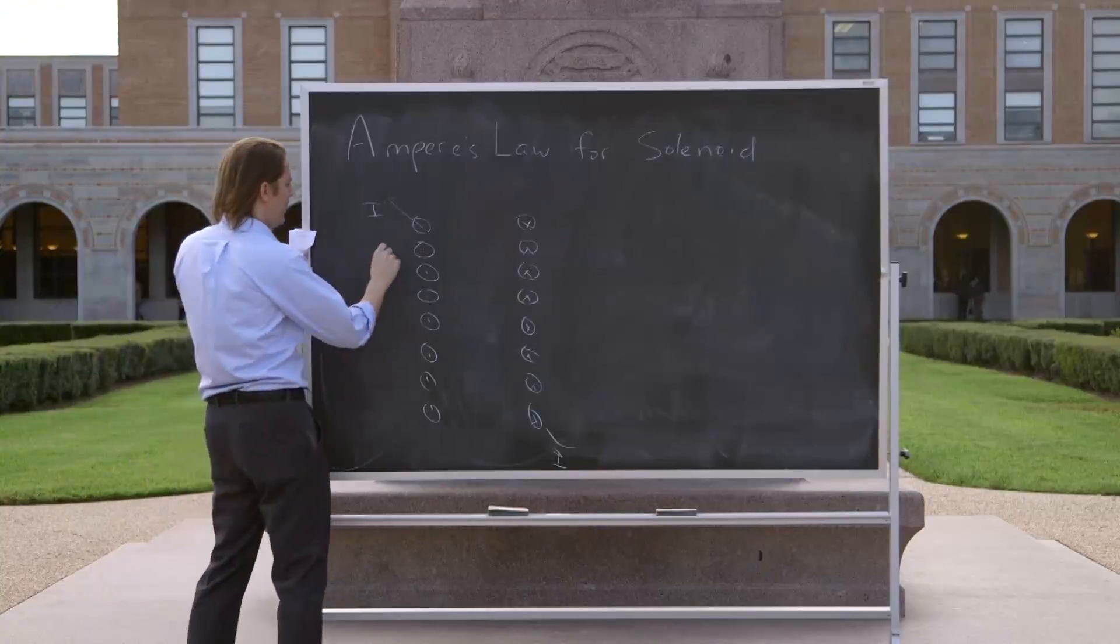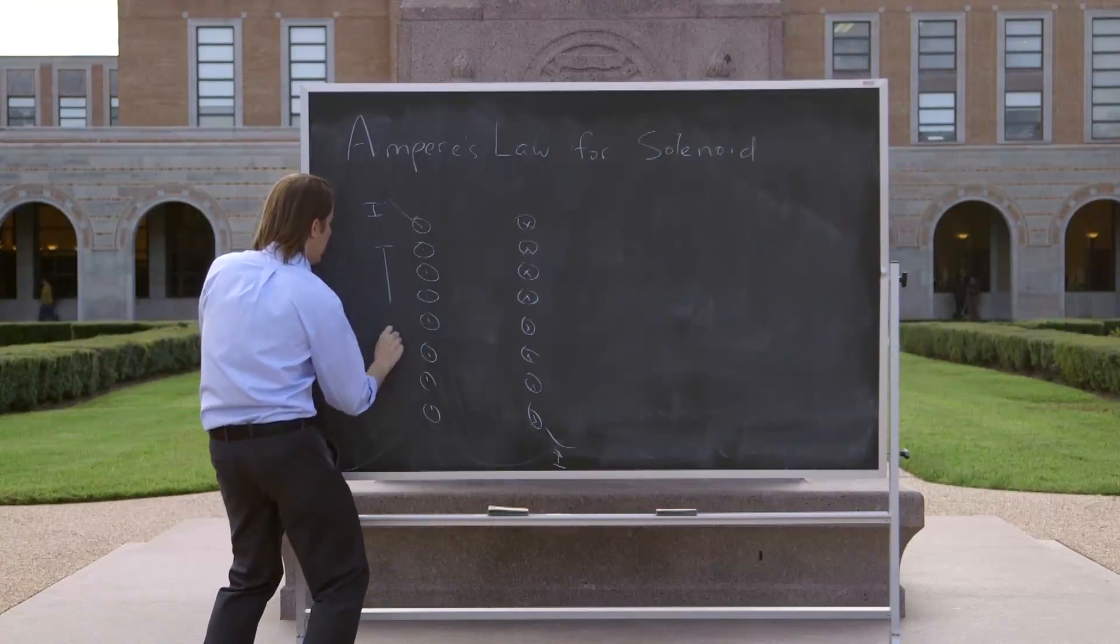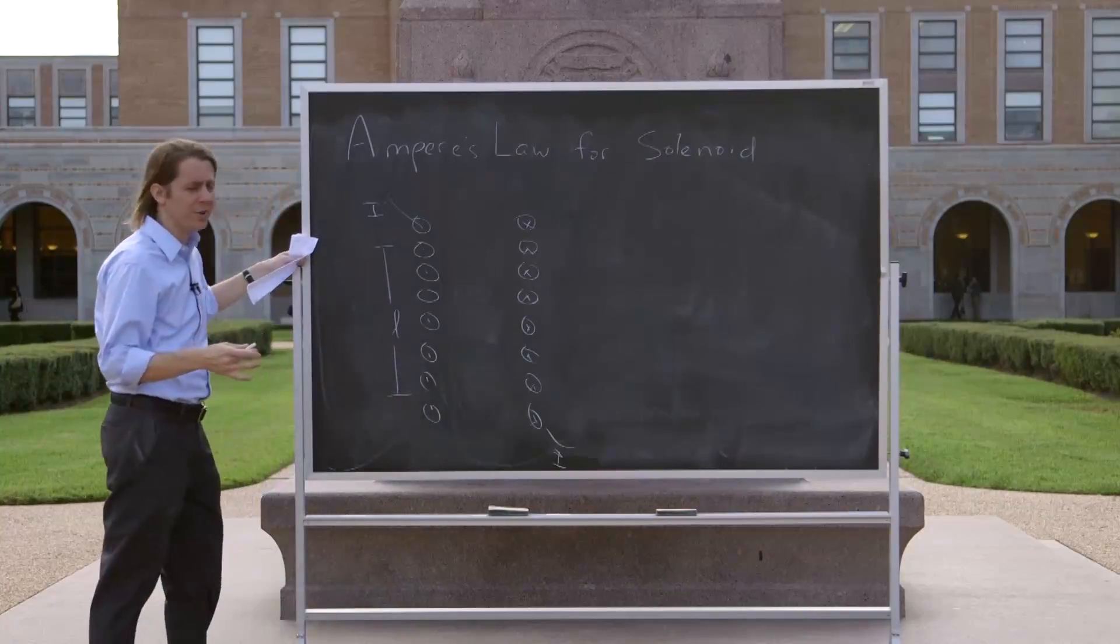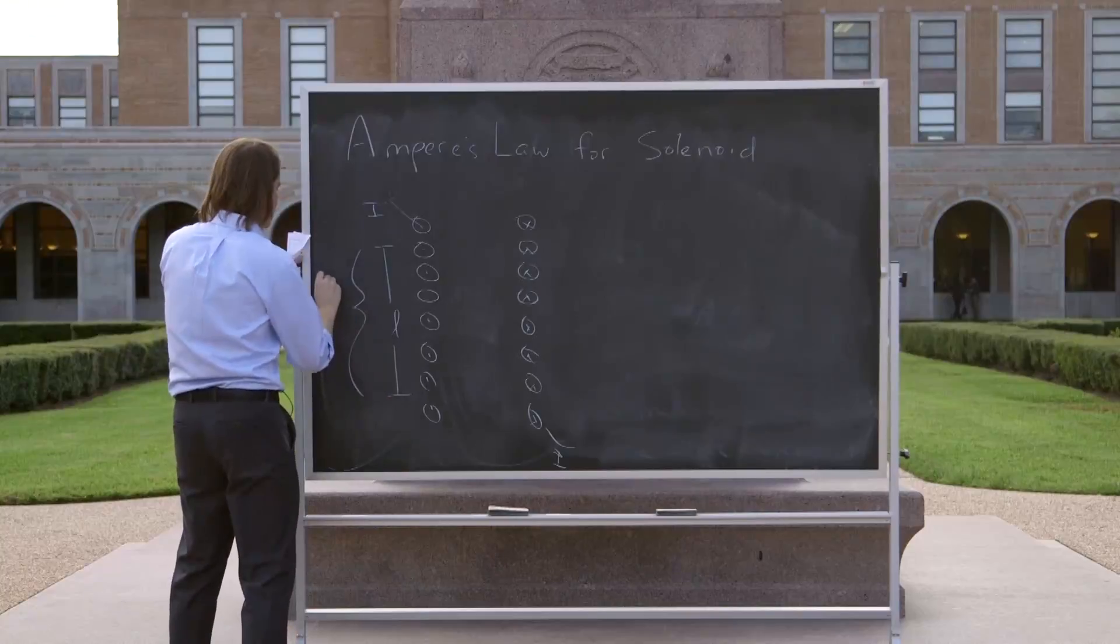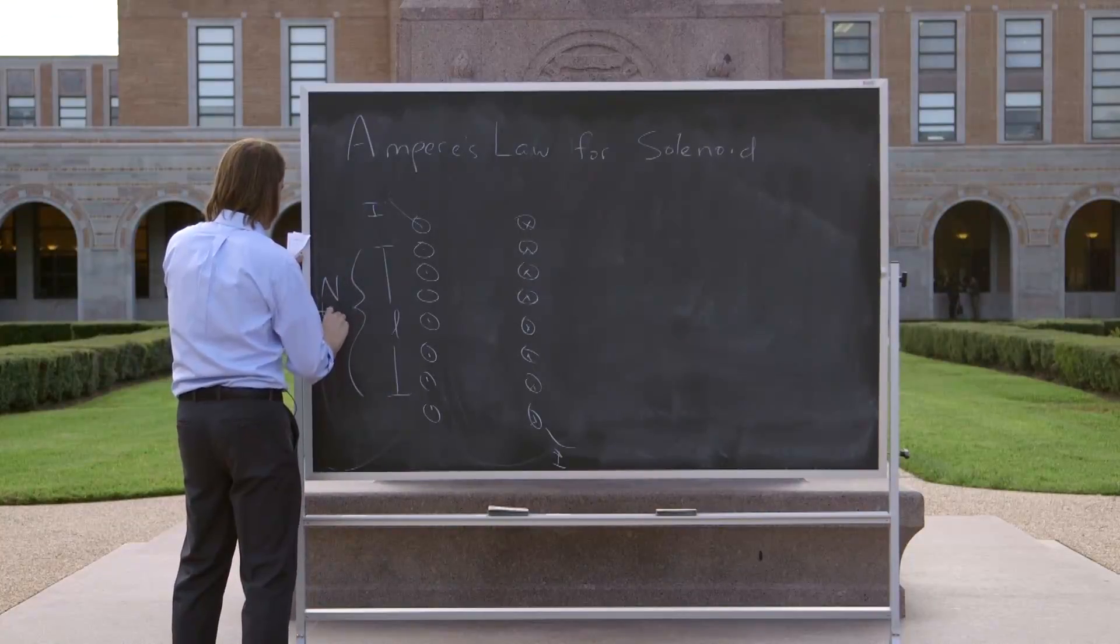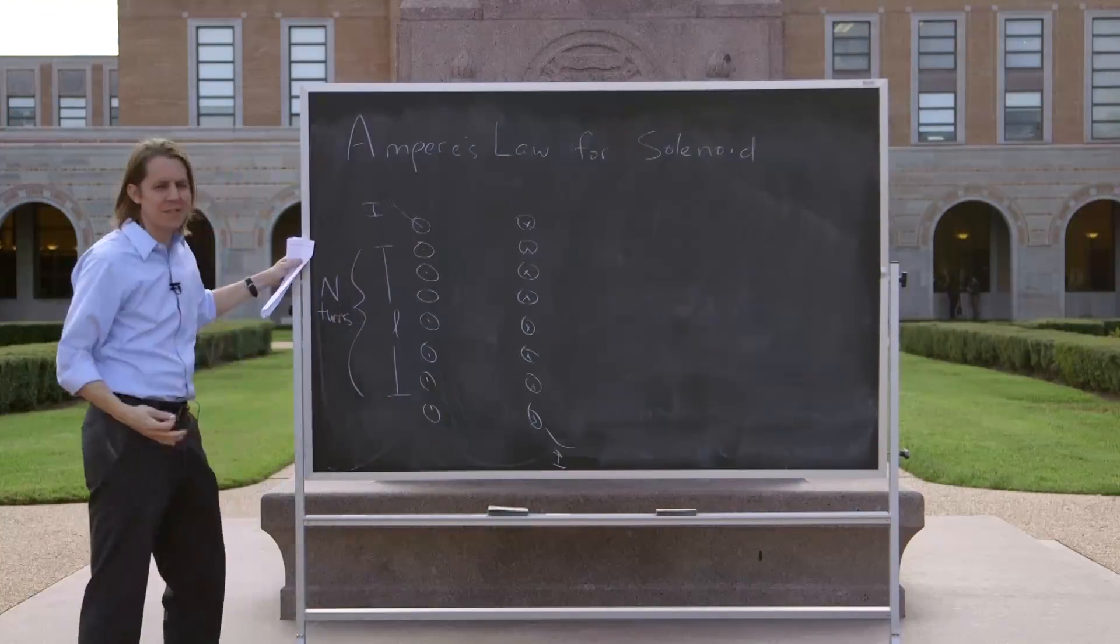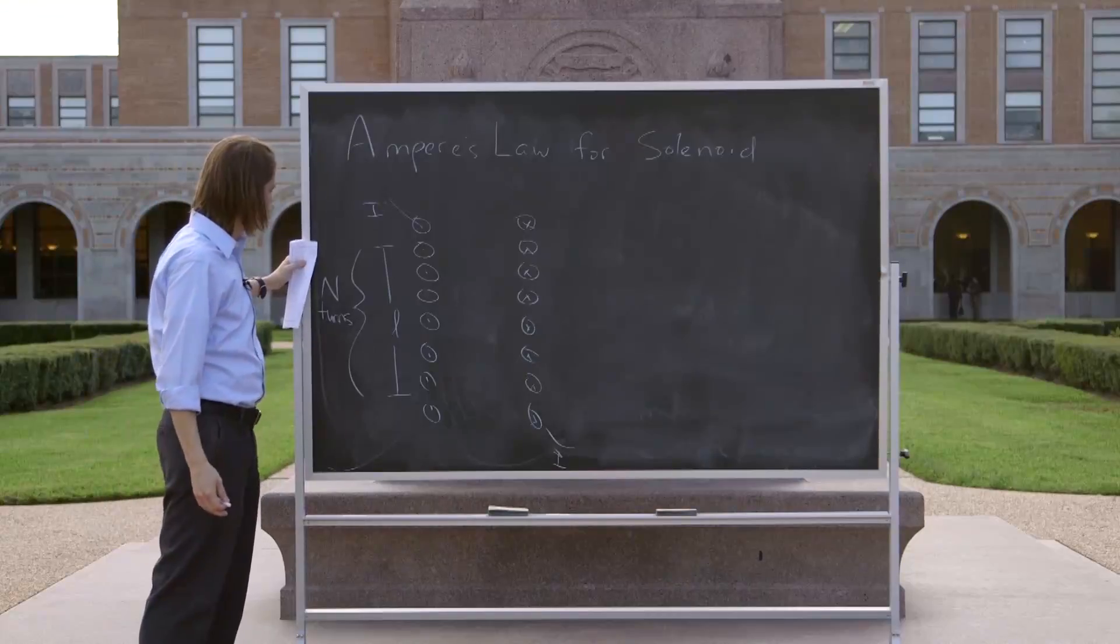Let's say in some length L, so it's actually a nice long solenoid, but let's say in some length L there are N turns, big N turns. Just to give us some idea of the density of the turns in the solenoid.